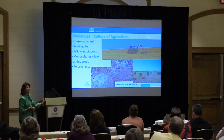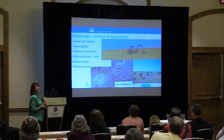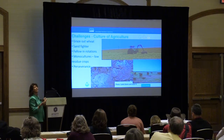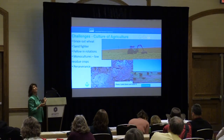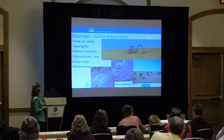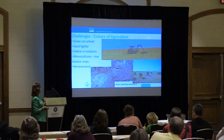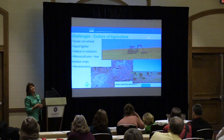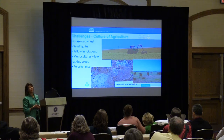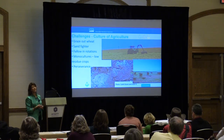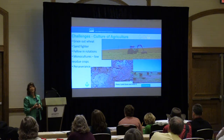Other challenges include fallow rotations, just like in Colorado and Oklahoma — they have a lot of fallow periods. They're using monocultures with low-residue crops like cotton. And then there's perseverance — these are brittle environments, and perseverance is an issue in some of these challenging conditions.